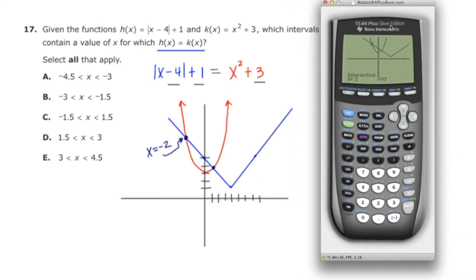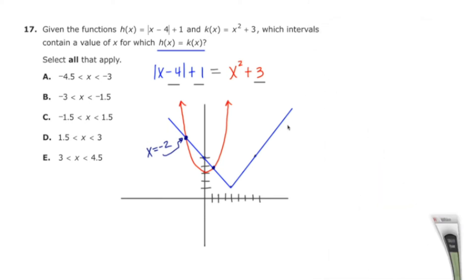Now I'm going to queue the calculator up again and I'm going to find the intersection over to the right by repeating the process. Press second trace five and let's go over here to the right most intersection point. And then I'll press enter, enter, enter. And this intersection is at x equals one. This guy right here is x equals one.